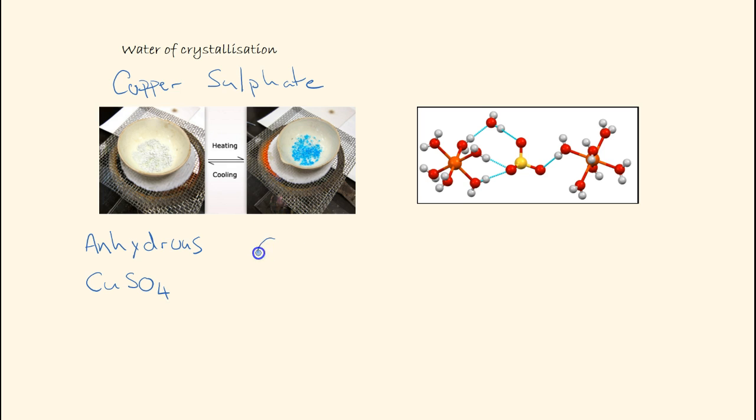We show the extra waters by having the dot after the CuSO4. The water of crystallization is simply water that is associated with the crystal.